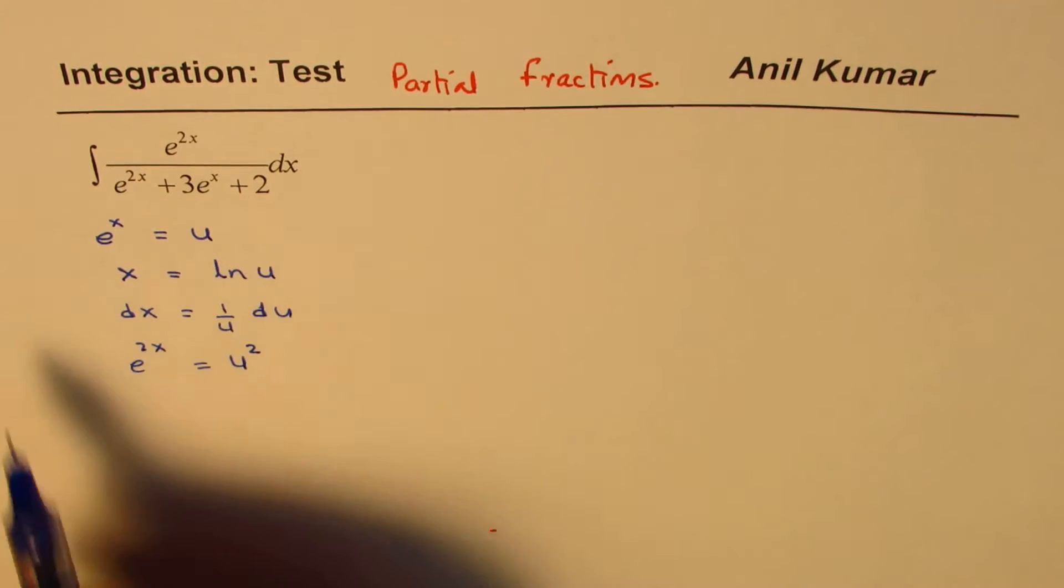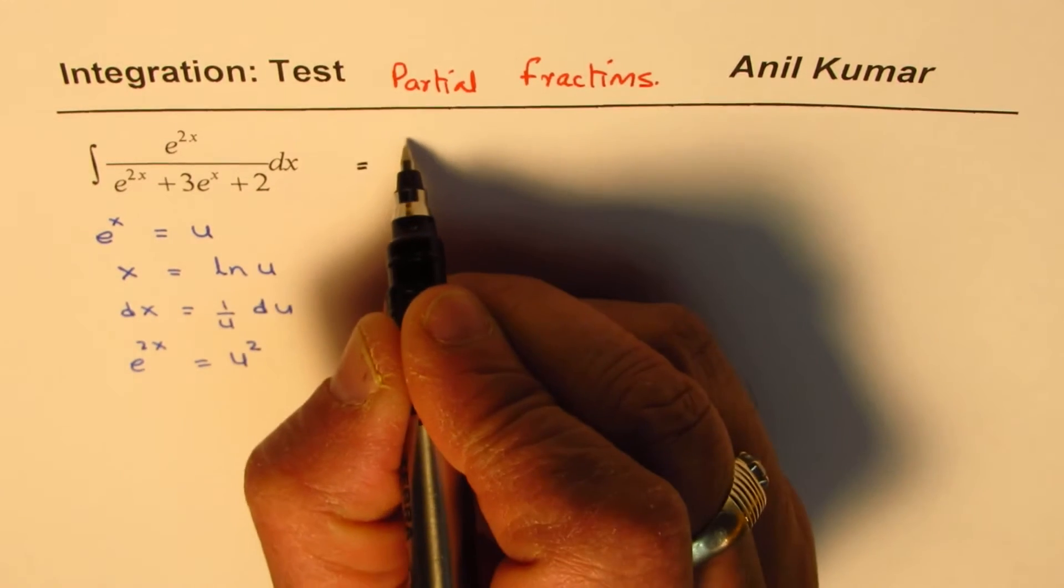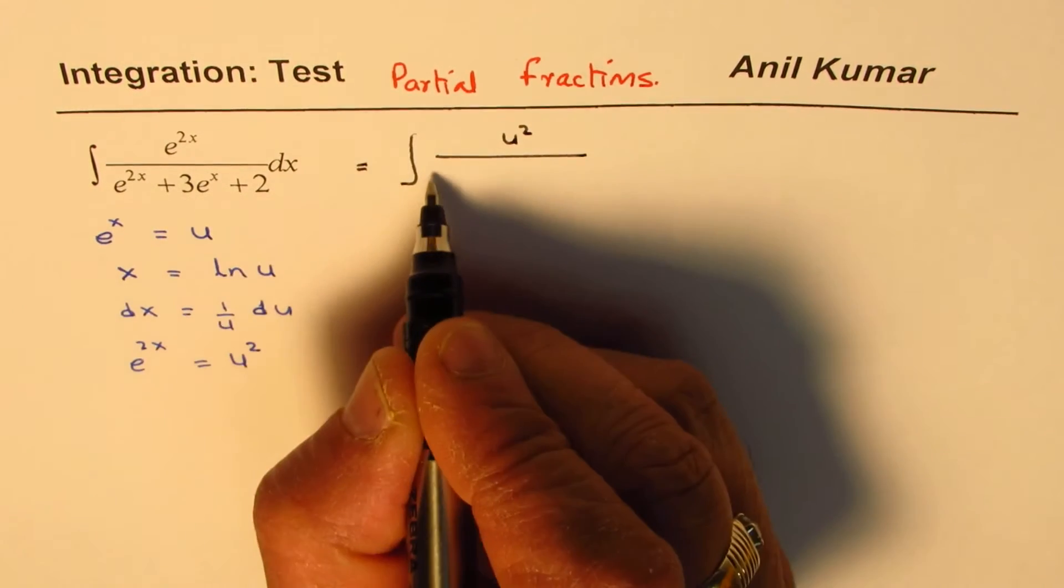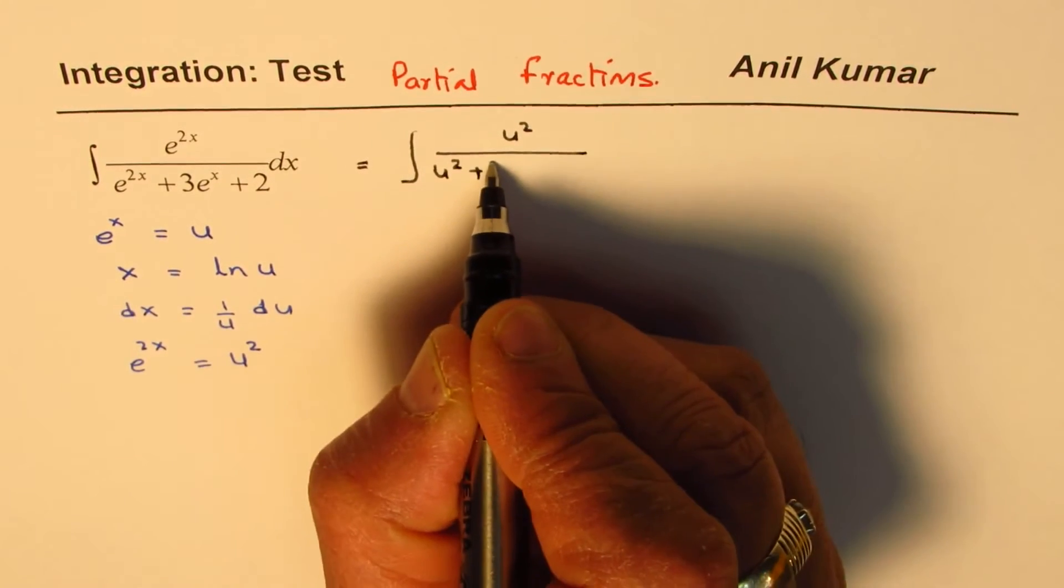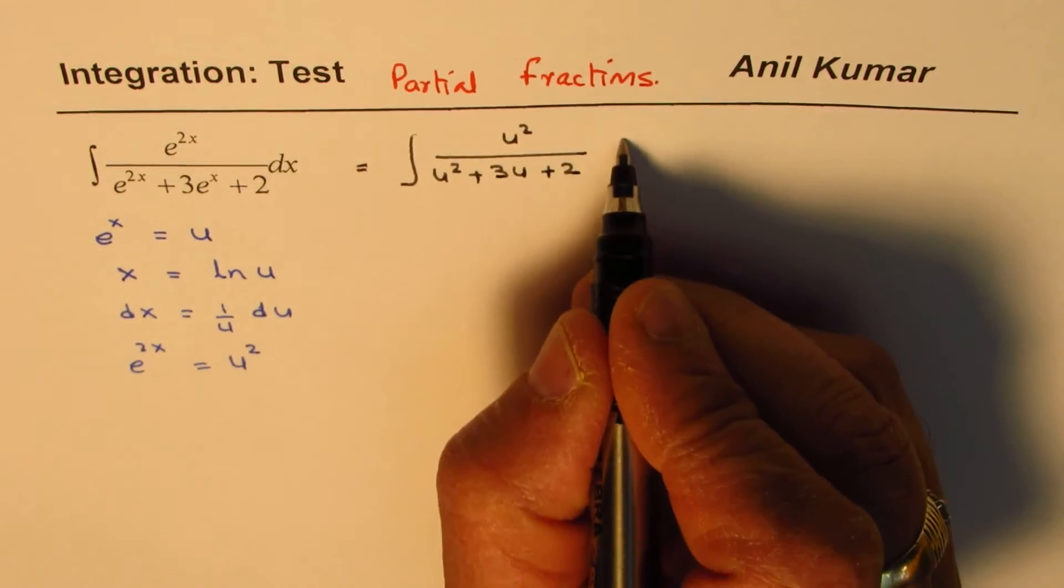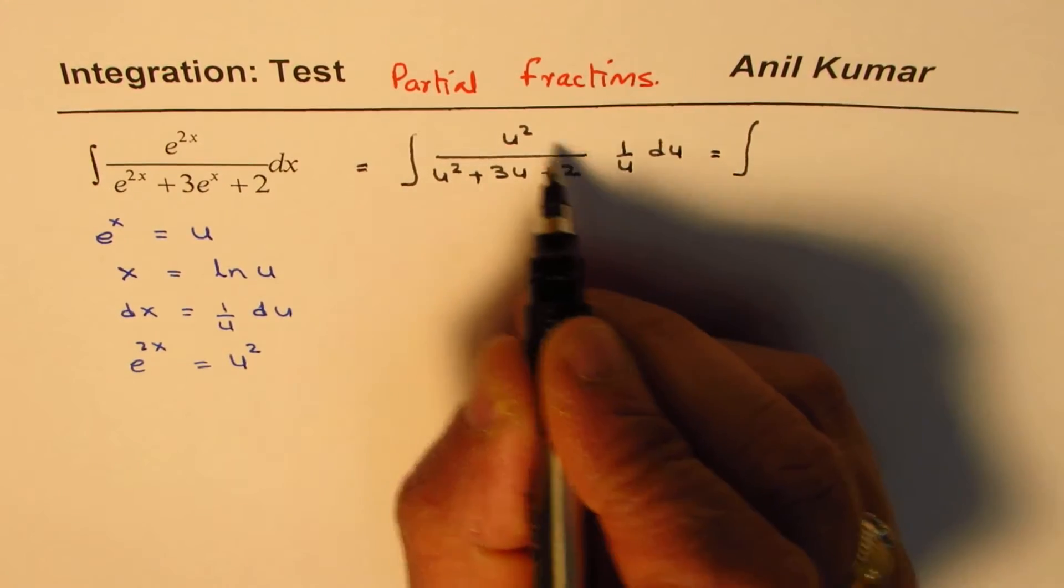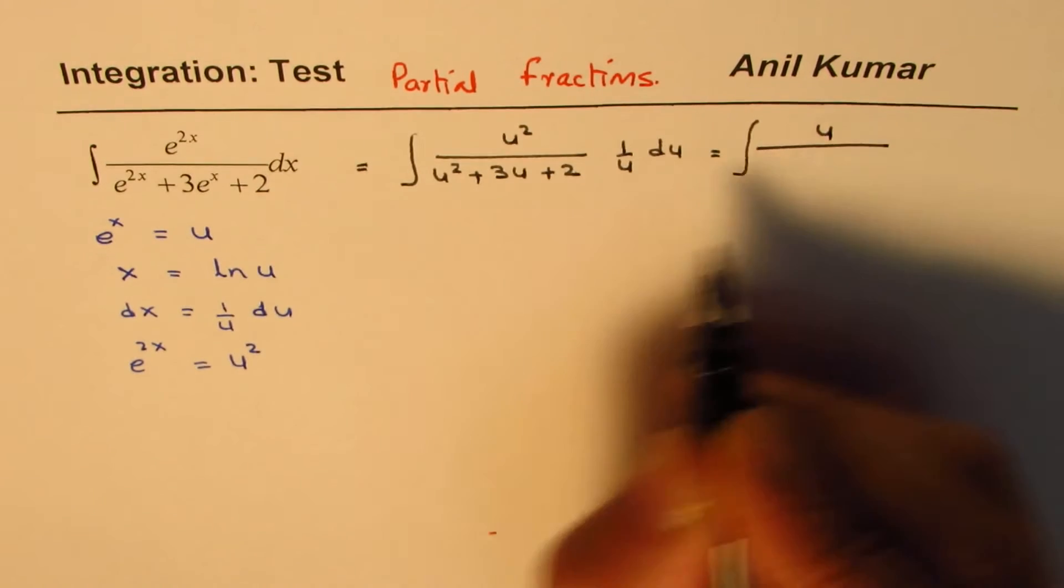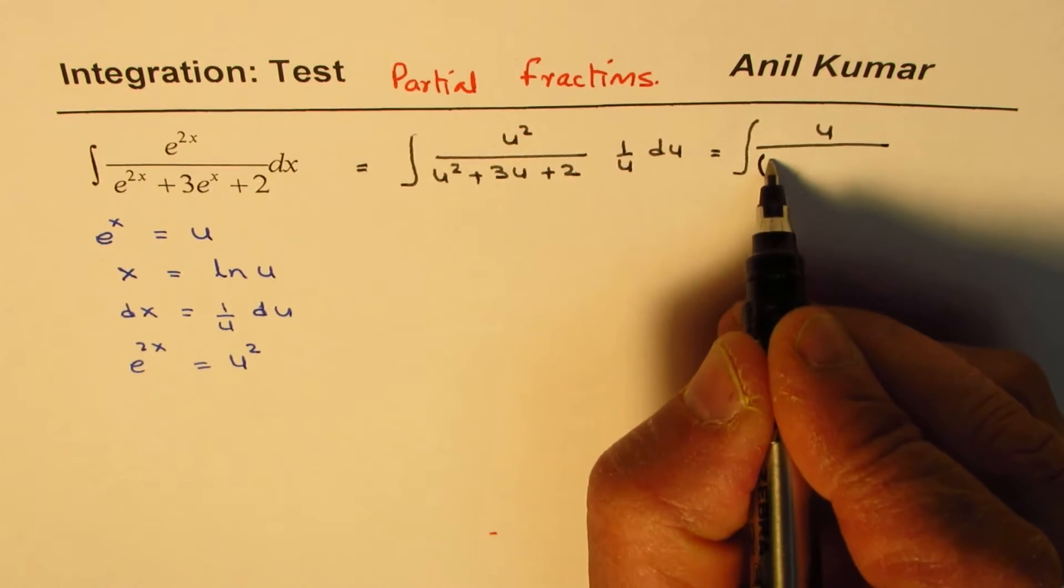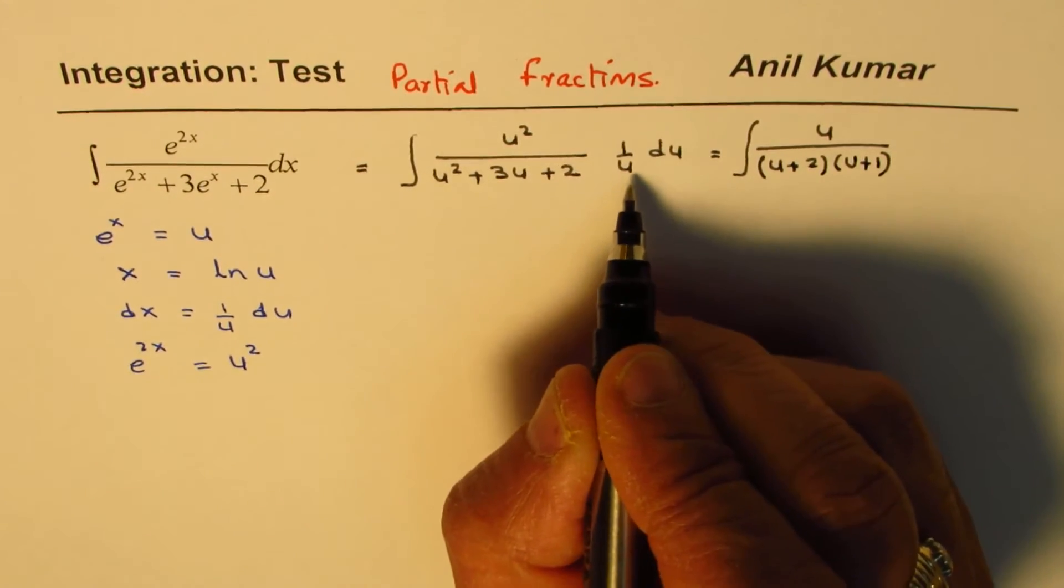So with these substitutions, I could rewrite the given integration question as u square divided by u square plus 3u plus 2 and dx will replace by 1 over u du. So which is equal to, 1 u gets cancelled, so you get u over u square plus 3u plus 2. You could factor this. You could write this as u plus 2 times u plus 1, and then du.